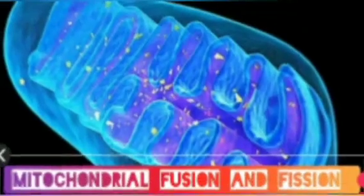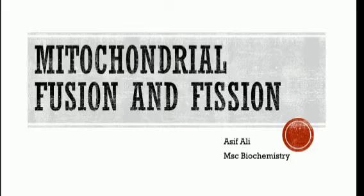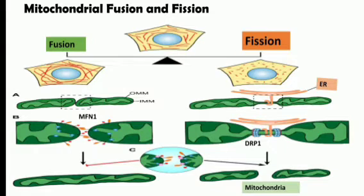Hello and welcome. Today we are going to discuss the mitochondrial life cycle involving fusion and fission. The two main mechanisms of mitochondrial membrane dynamics — fusion and fission — are key events regulating mitochondrial morphology that need to be balanced to support normal mitochondrial function and prevent diseases.